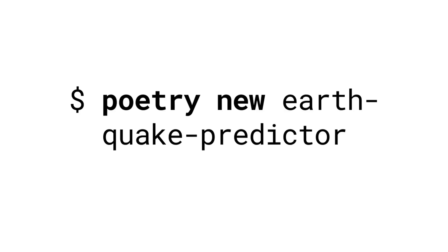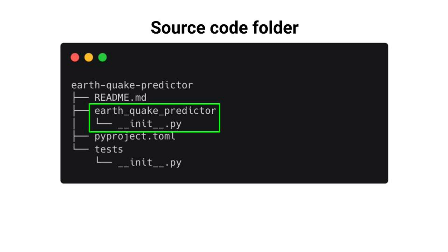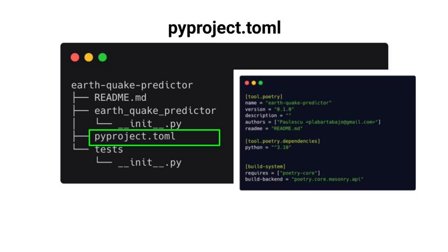Tip number one: structure your code well from the beginning. Imagine you want to build a machine learning service that predicts earthquakes. To get started, go to the terminal and type `poetry new` followed by the name of your project — this is also the name of your Python package. Poetry generates a file structure with a directory for your source files written in Python and a pyproject.toml file, which is the main configuration file where you declare dependencies and extra tools such as linting.